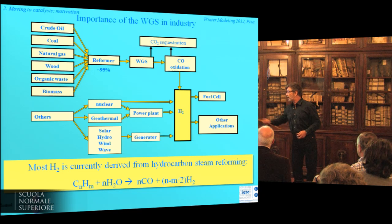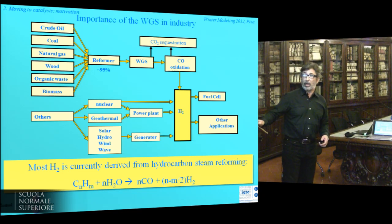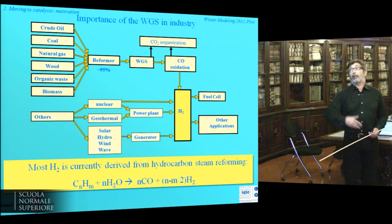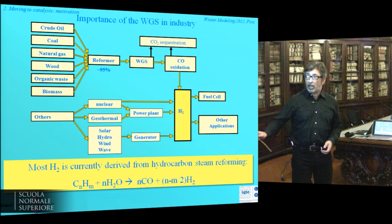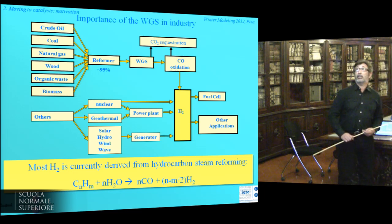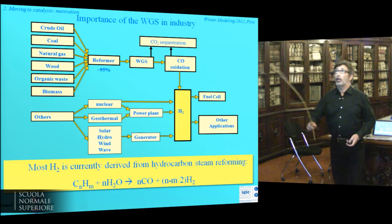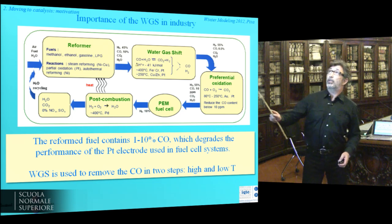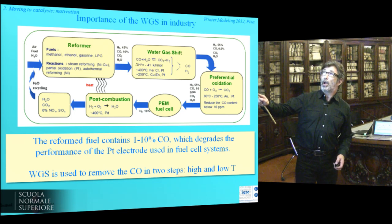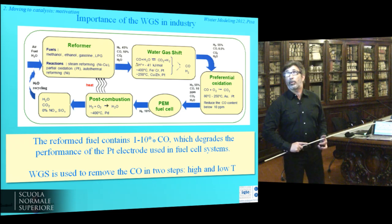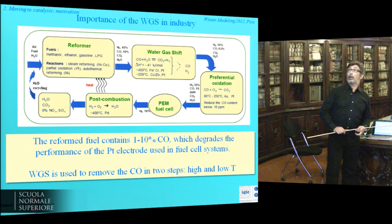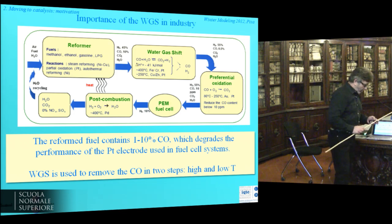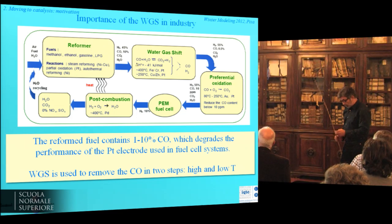This is a simple but very important industrial reaction. Most of the hydrogen obtained in industry comes from steam reforming of hydrocarbons — for example, methane steam reforming — which produces CO plus hydrogen. This hydrogen is subsequently used in refineries for hydrotreatment of crude oil, or in a fuel cell. But if used in a fuel cell, the CO must be removed because it's a poison for the catalyst. So you need to do the water-gas shift and then preferential CO oxidation.